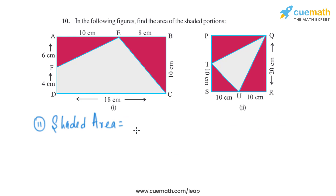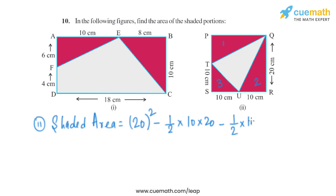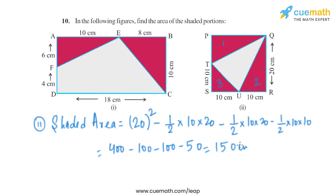Now for the second part, we again find the area of the shaded portion. We find the area of the square — 20 squared — and then subtract the areas of the three triangles. The area of the square is side squared, so 20 squared, minus half into 10 into 20, minus half into 10 into 20, and minus half into 10 into 10. That gives 400 minus 100 minus 100 minus 50, which equals 150 square centimeters. That is the area of the shaded portion of the second part.